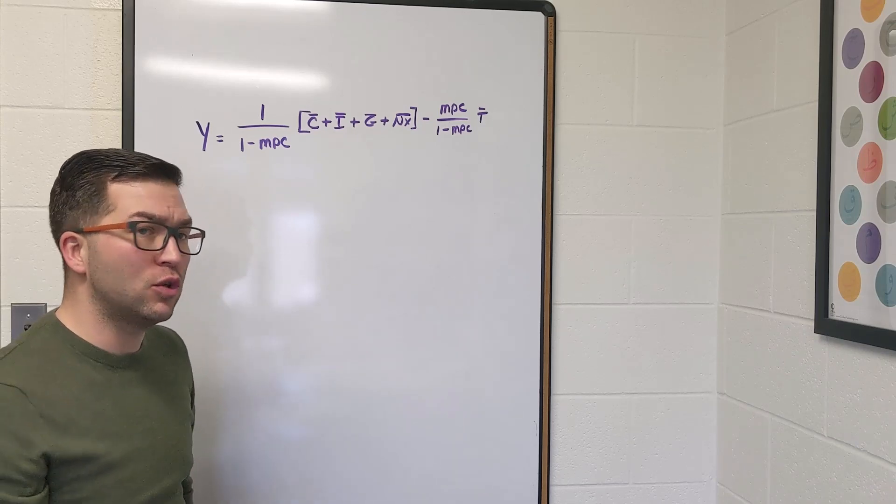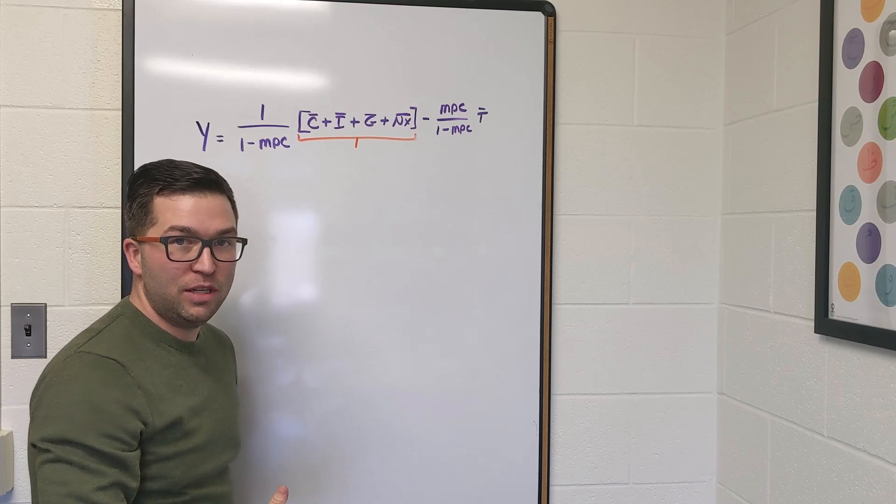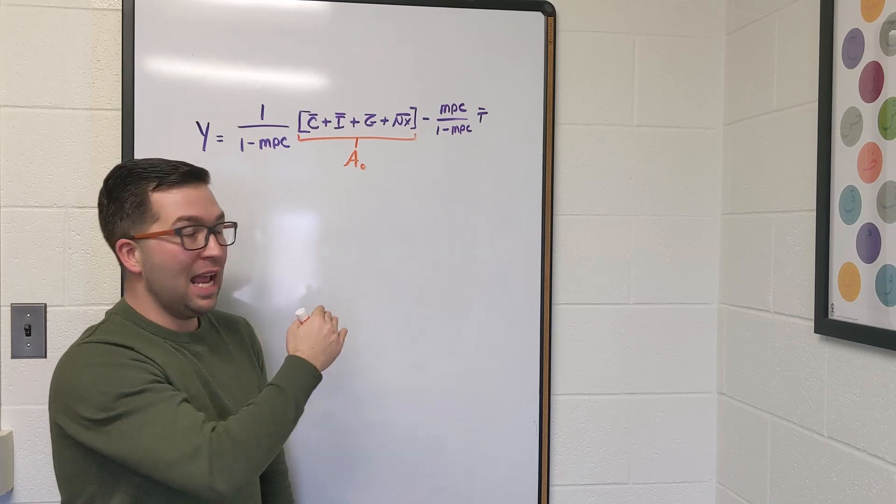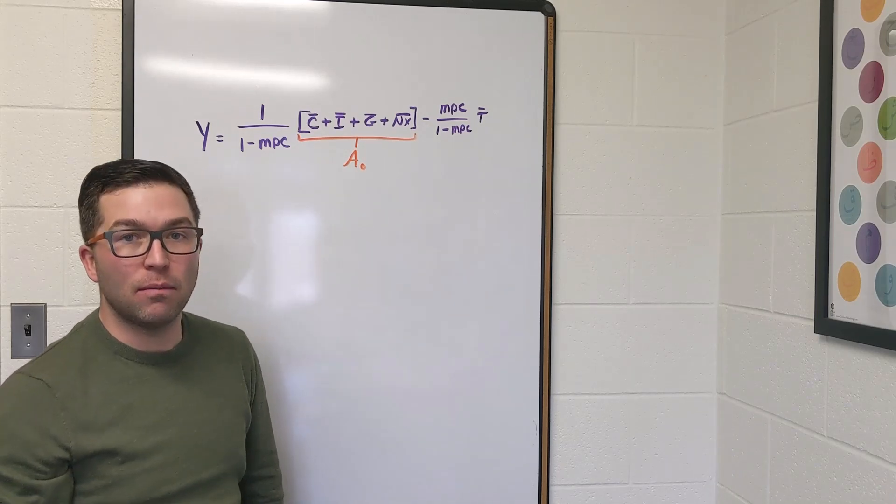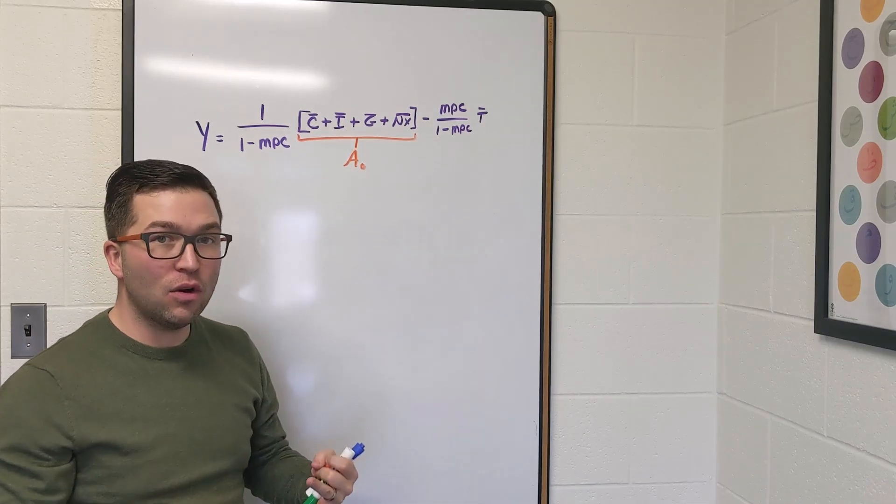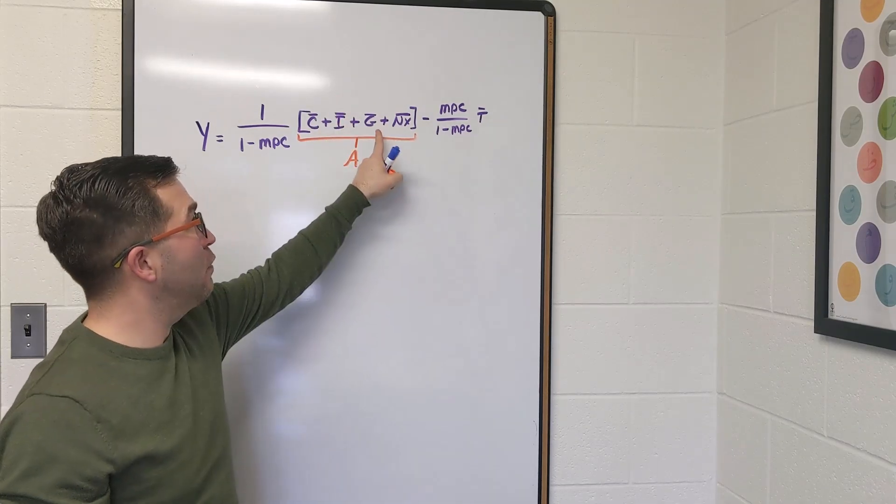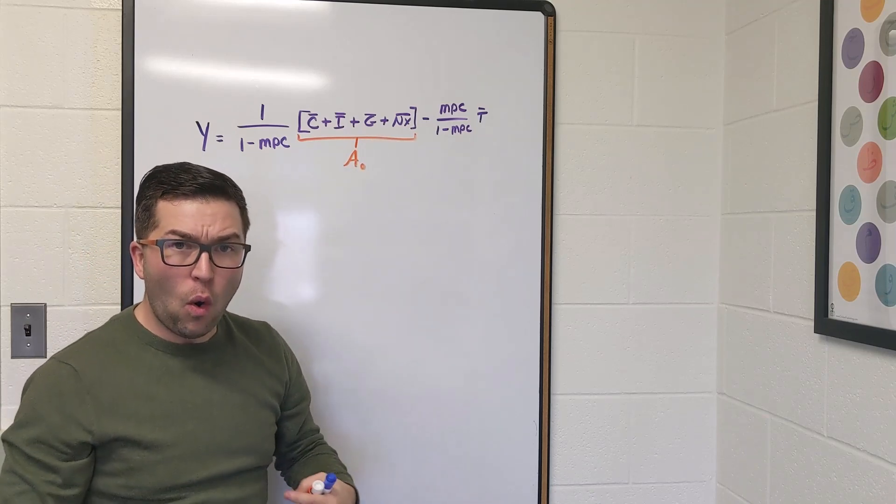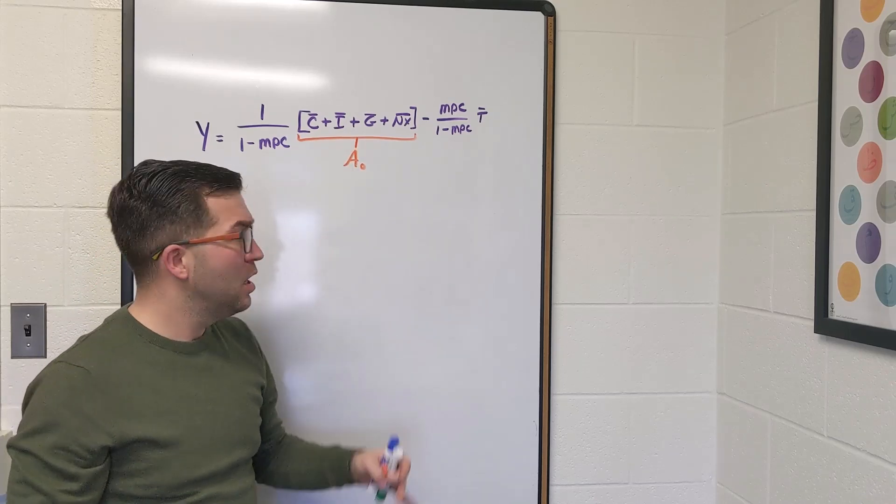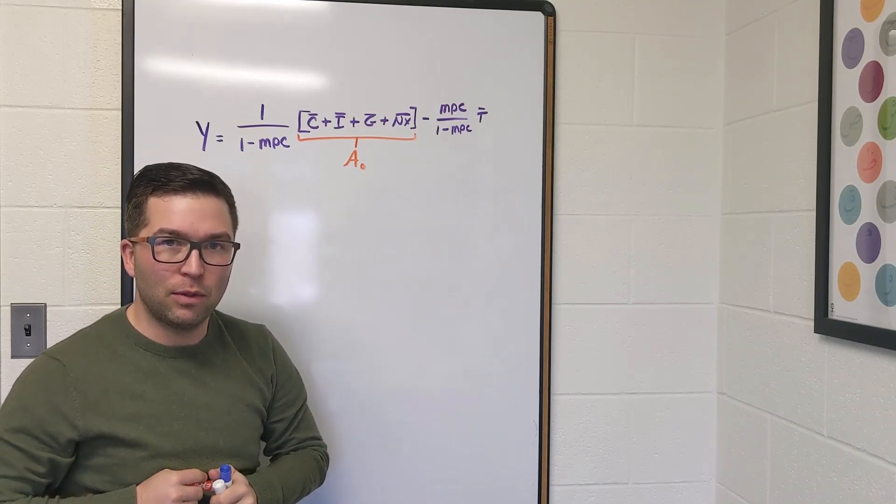The first one we're going to talk about we've already introduced, which is this right here. Notice this is C bar, I bar, G bar, and X bar, which is our autonomous spending, which we denoted as A sub zero or A naught. This is important because you can think of when there's a shock or a change to the economy, sometimes these things will increase or decrease, or perhaps the government directly changes government purchases, or the Federal Reserve changes interest rates, which we know will impact consumption and investment. So it's important that this is inside of this overall GDP macroeconomic equilibrium equation.